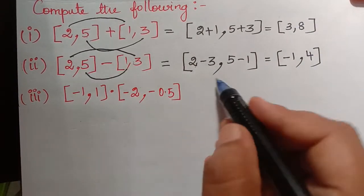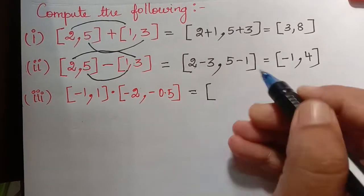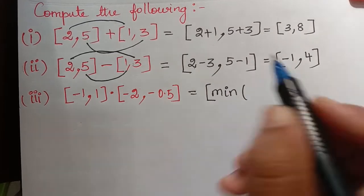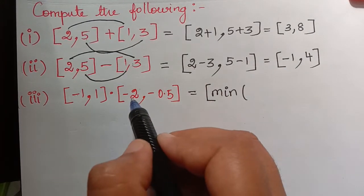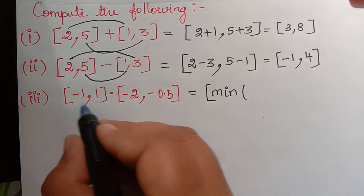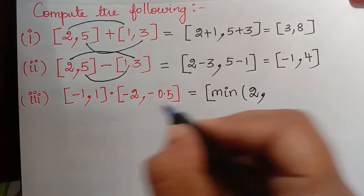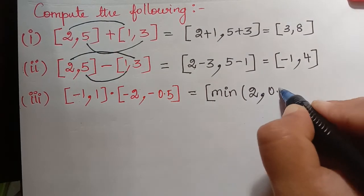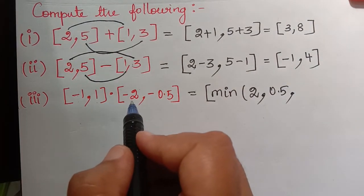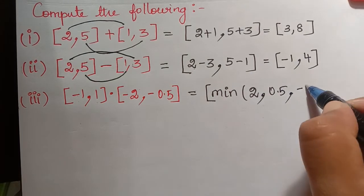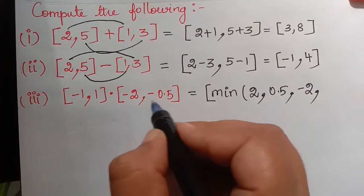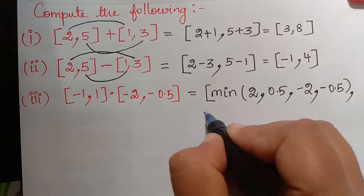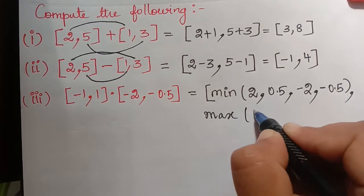The next operation is multiplication. We take the minimum of: (−1)×(−2) = 2, (−1)×(−0.5) = 0.5, 1×(−2) = −2, and 1×(−0.5) = −0.5. So we have minimum of {2, 0.5, −2, −0.5} and maximum of the same values.